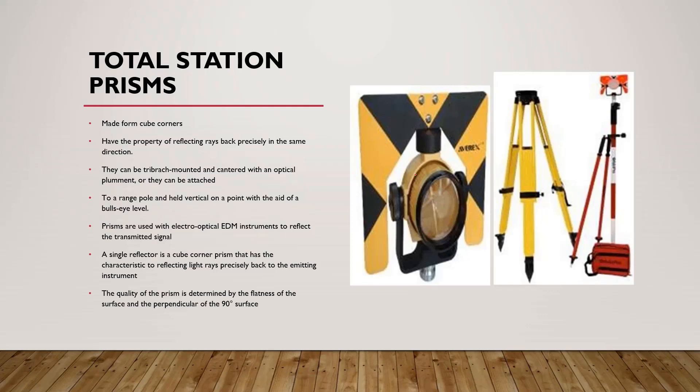In class, the first topic is total station prisms. This prism is made from cube corners. You will need to manage total station prisms using tri-bar search. Two arranged prisms are used with electro-optical EDM instruments. If you use an electro-optical EDM instrument, it will reflect the transmitter signal. A single reflector is a cube corner prism that has the characteristic of reflecting light rays precisely back to the emitting instrument. The quality of prisms is determined by the flatness of the surface and the perpendicularity of the 90-degree surface.